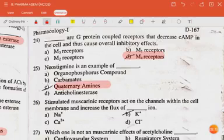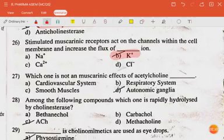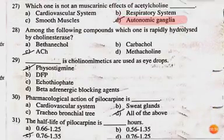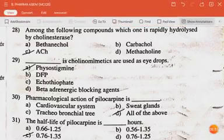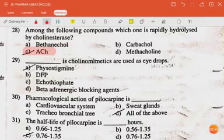Neostigmine is an example of anticholinesterase agents. Stimulated nicotinic receptors act on the channels within the series, causing flux of potassium ions. Question: which one is not an autonomic effect of acetylcholine? The answer is autonomic ganglia.